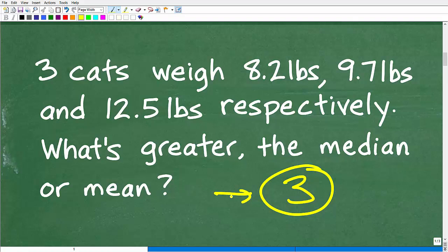But in this particular case, it's pretty straightforward in terms of what we have. So we have three cats, we have the weights of these three cats, and what we're trying to do is figure out what's greater, the median or mean. So clearly we're going to need to understand what is the median and what is the mean and how to calculate each of these respective measures. So let's go ahead and review that.